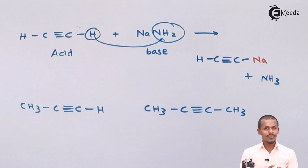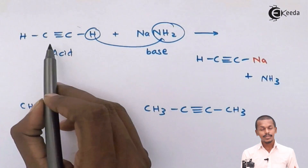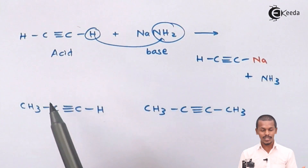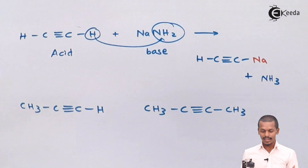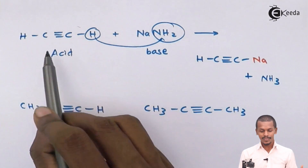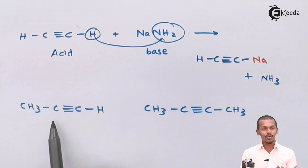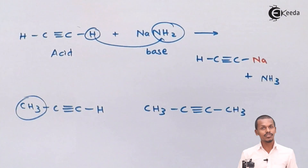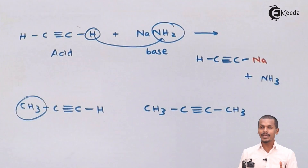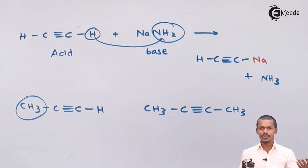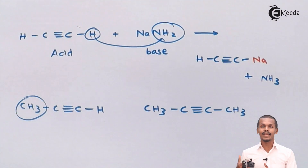Talking about the order of acidity of alkynes: ethyne will be more acidic because it consists of two acidic hydrogen atoms that can be removed. Propyne consists of a CH3 methyl group, and because of the presence of this group the hydrogen atom won't be removed as easily — so it is less acidic. Ethene would also be less acidic, and ethane is very much less acidic.